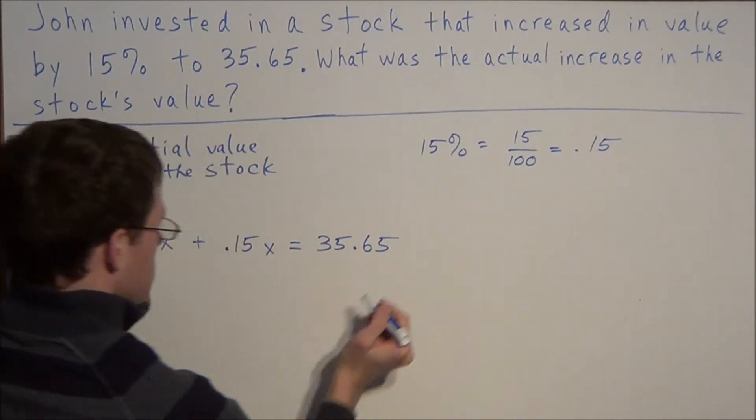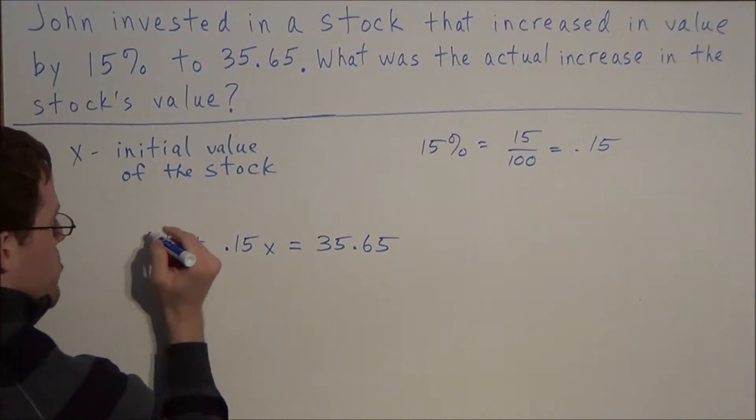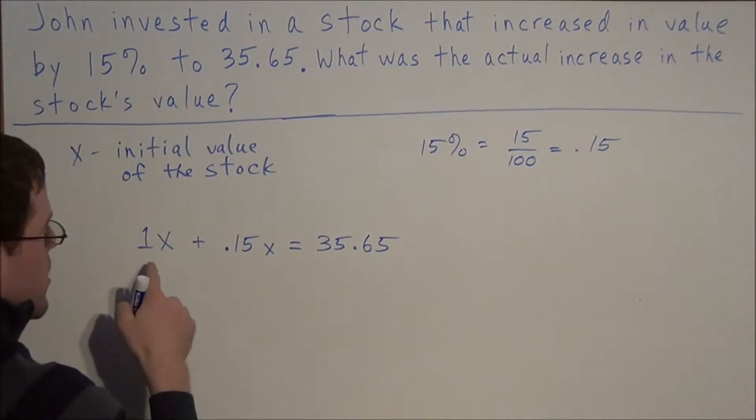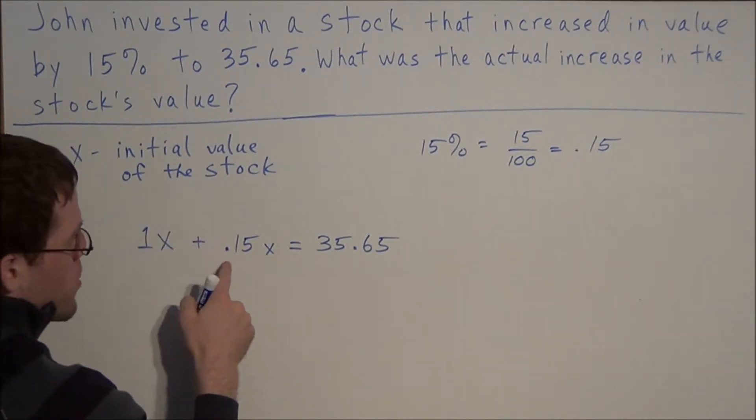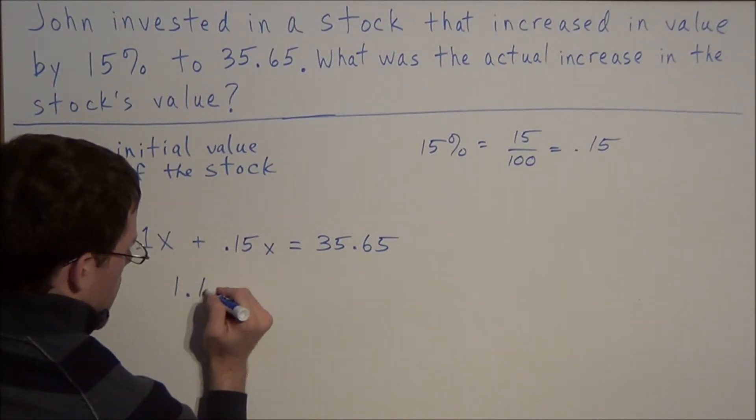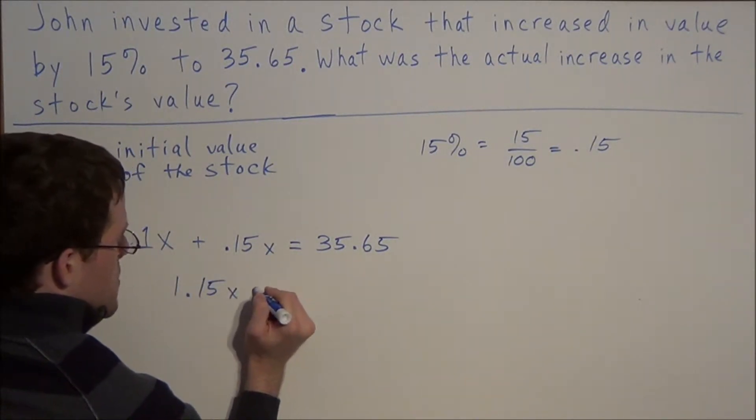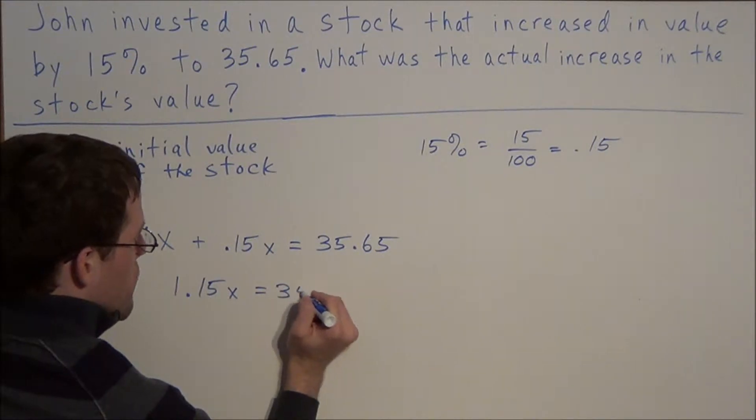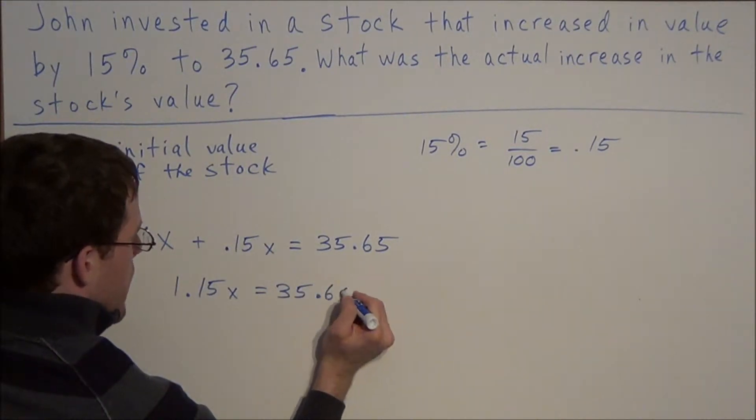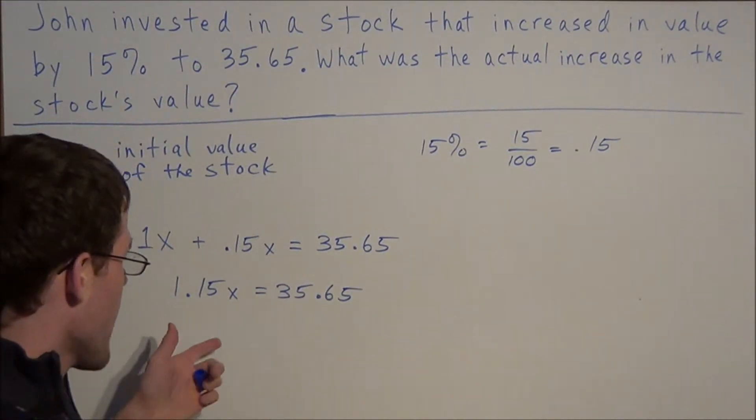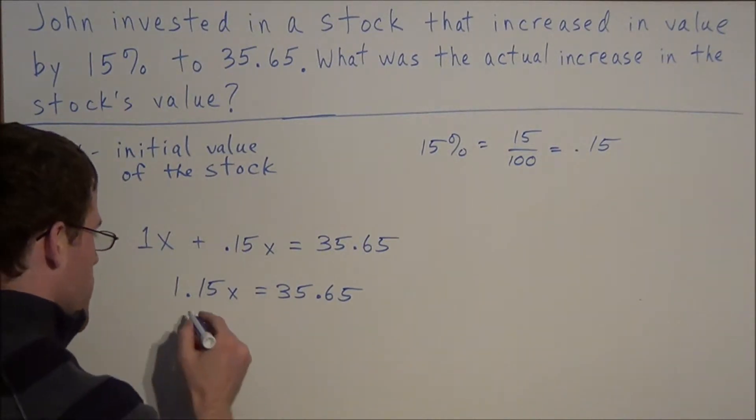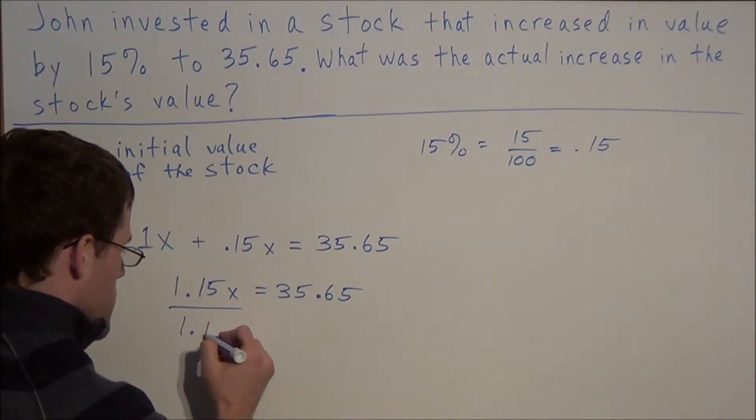So now when we're solving for X, remember, when there's no number in front of the X, we can think of this as a 1. So we have 1X plus 0.15X gives us 1.15X, and this equals 35.65. To find the value of X, we're going to divide both sides by 1.15.